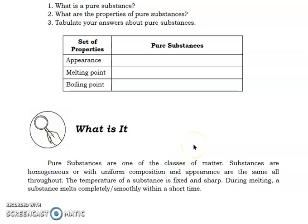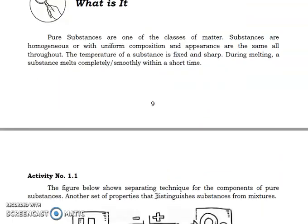Now, let's proceed with the next part which is What Is It. Pure substances are one of the classes of matter. Substances are homogenous or with uniform composition and appearance are the same all throughout. The temperature of a substance is fixed and sharp. While during melting, a substance melts completely or smoothly within a short period of time.